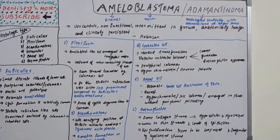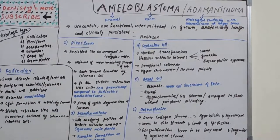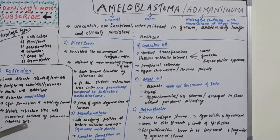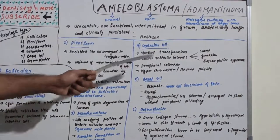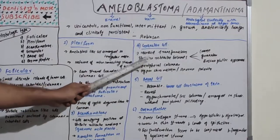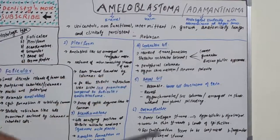In acanthomatous type: the cells occupying the position of stellate reticulum undergo squamous metaplasia with keratin formation or keratin pearl formation. In granular cell type: there is marked transformation of stellate reticulum cells into a coarse granular eosinophilic appearance, with peripheral columnar cells, hyperchromasia, and reverse polarity also seen.